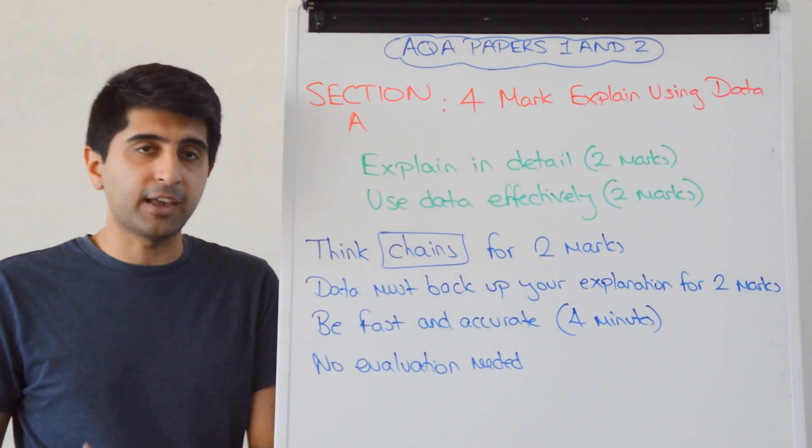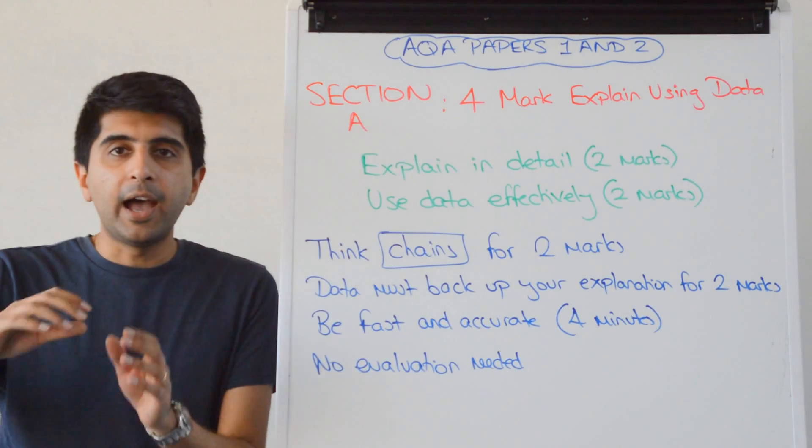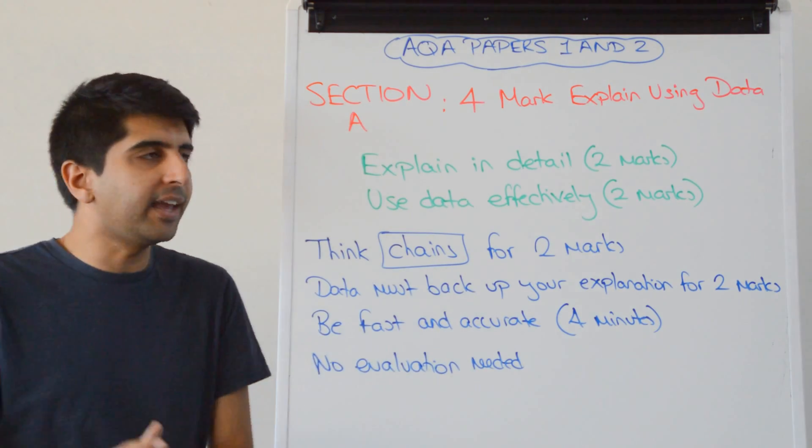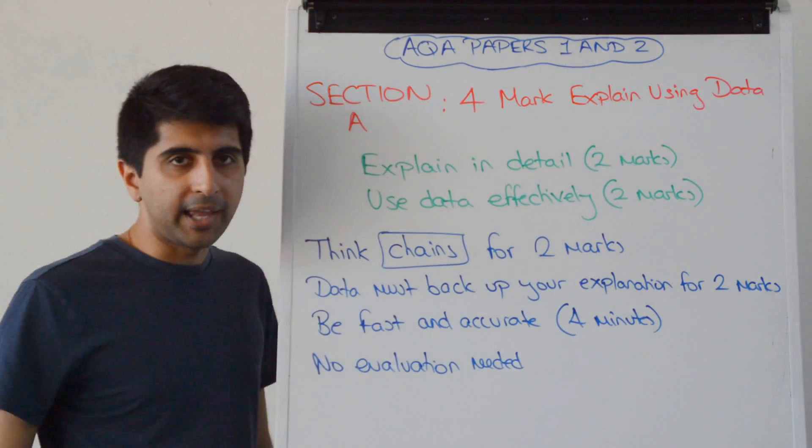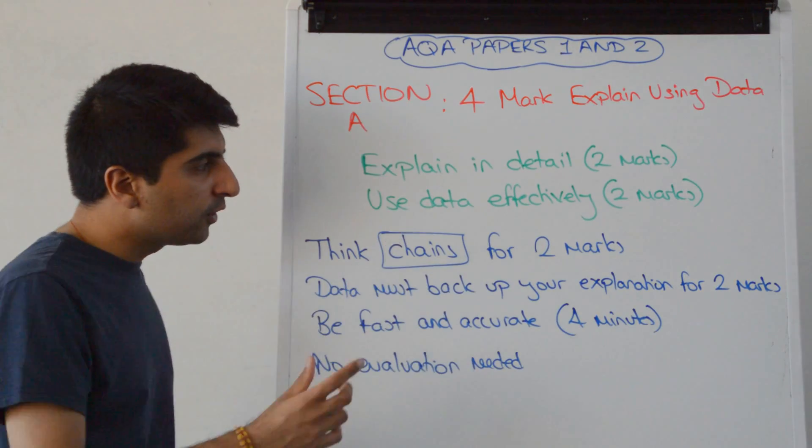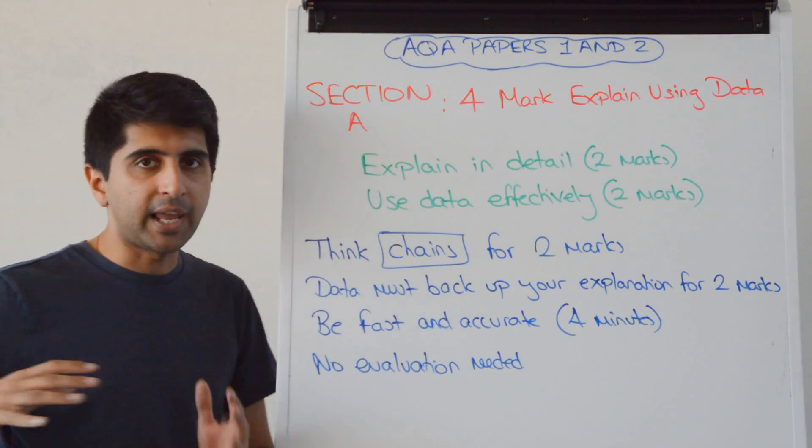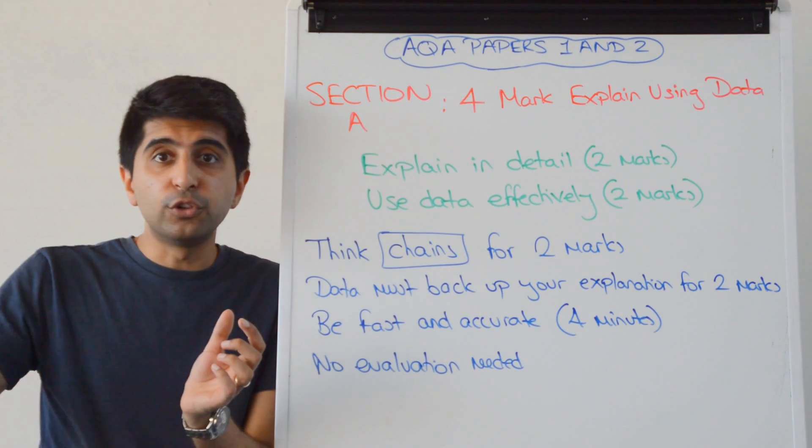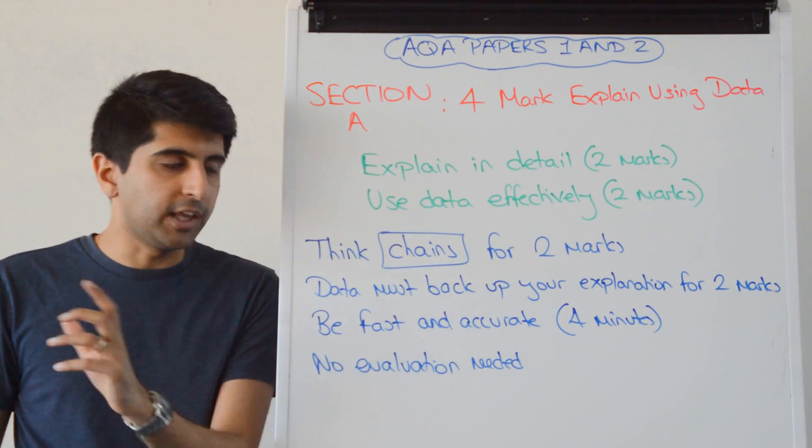That's literally just quoting something from the extract - a simple quote, explaining some data, maybe even just calculating an average or doing something with the data effectively to explain whatever you're saying in theory. So in your mind you're thinking chains. Whatever detail you're talking about, whatever theory, just write the full chain. That's the detail which will get you two marks.